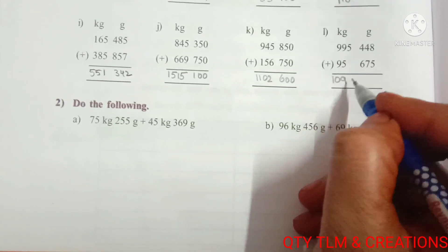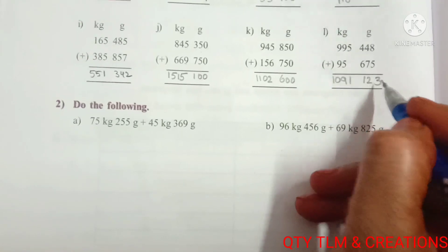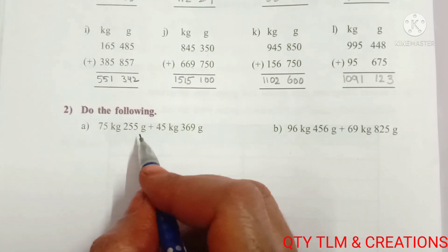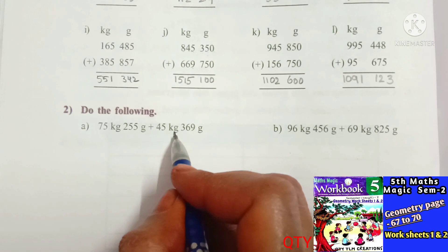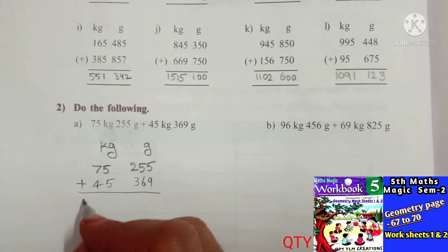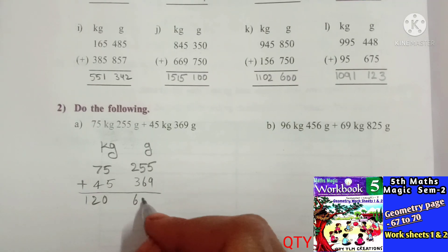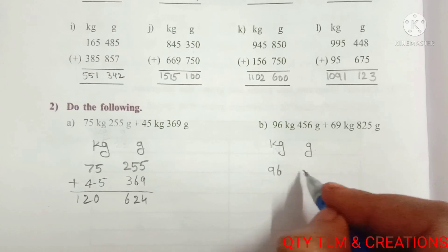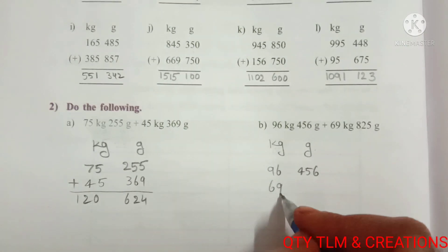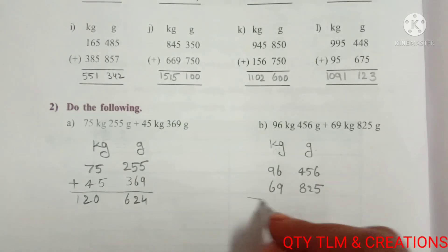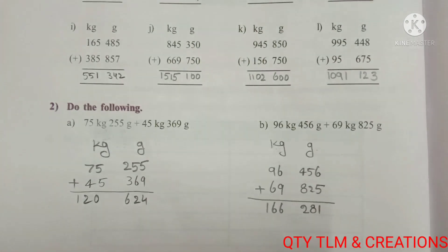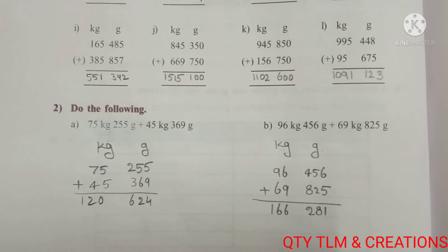Next question: (a) 75 kg 255 g + 45 kg 369 g = 120 kg 624 g. (b) 96 kg 456 g + 69 kg 825 g = 166 kg 281 g. We will continue the remaining worksheets in another video. Until then, take care. Thank you, bye bye.